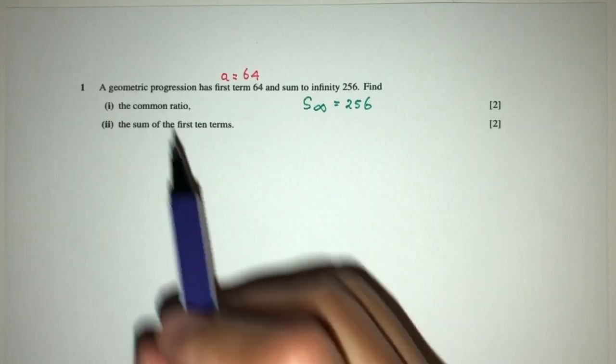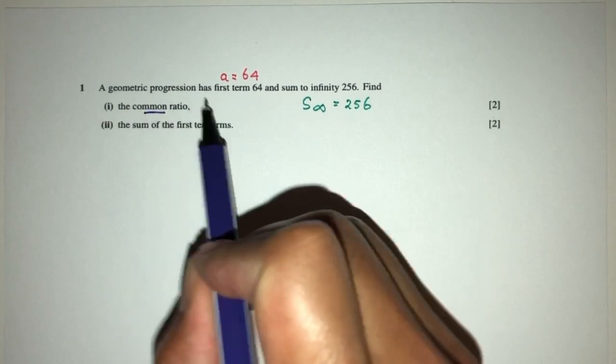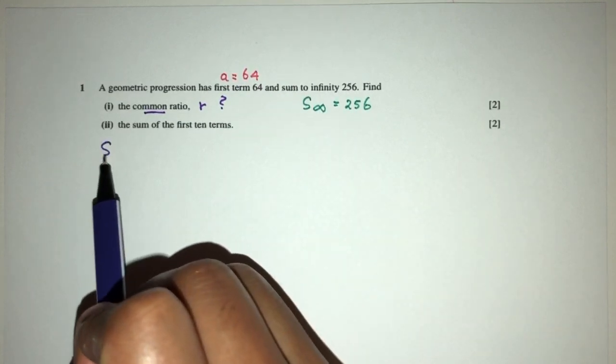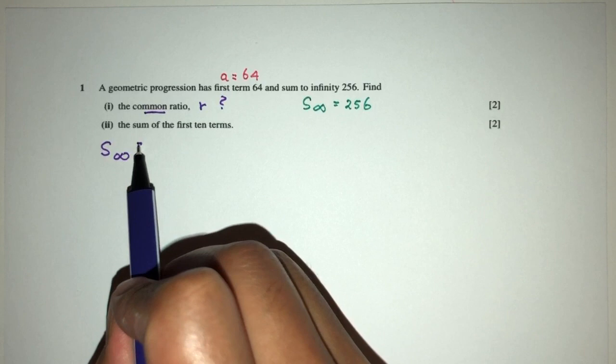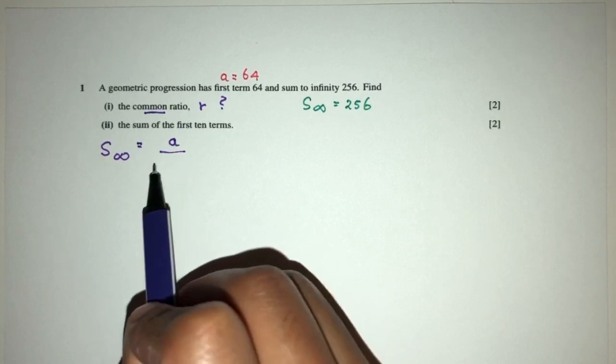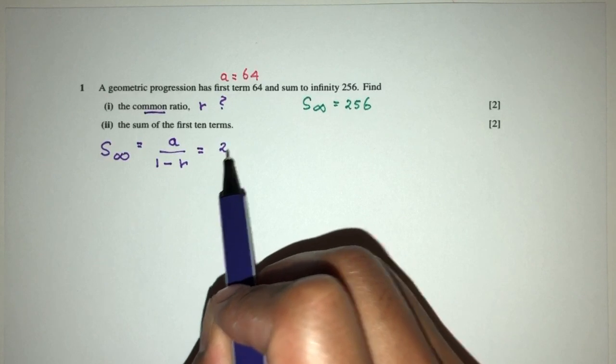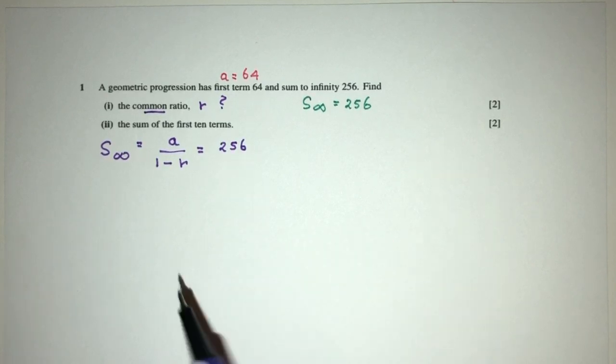Now part one, find the common ratio. We know this is the value of R. How can we find this? We have to use this information. The formula we know for the sum to infinity is equal to what? A over 1 minus R is going to equal to 256.